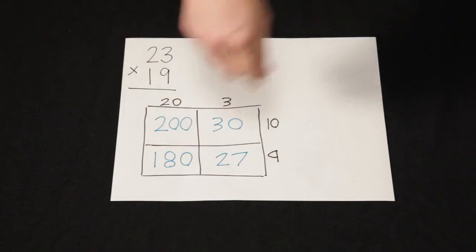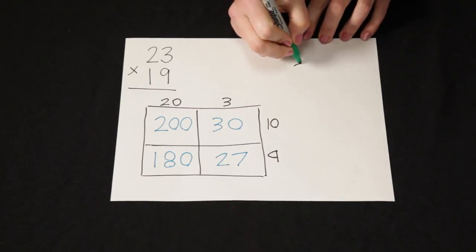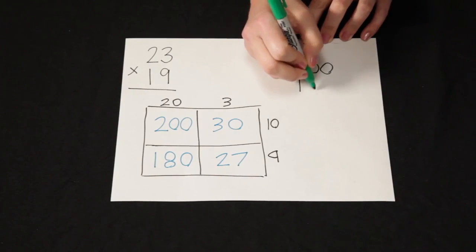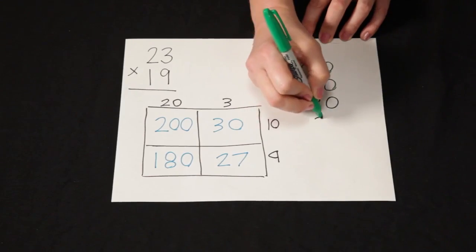Now we can take each of these, these are our partial products, and we can add them together. So I start 200 plus 180 plus 30 plus 27.